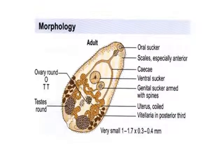Now here are the morphological features of the adult worm. The photo here can show you the outer spines; the tegument of this worm is equipped with spine cover — spines are very clearly visible. There are the ventral sucker and genital sucker, both armed with spines. Now the uterus, and the vitellaria in the posterior third — the viteline gland is visible posteriorly.